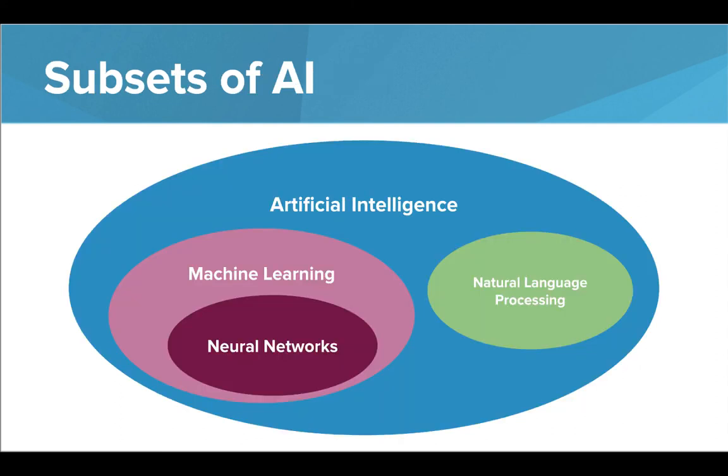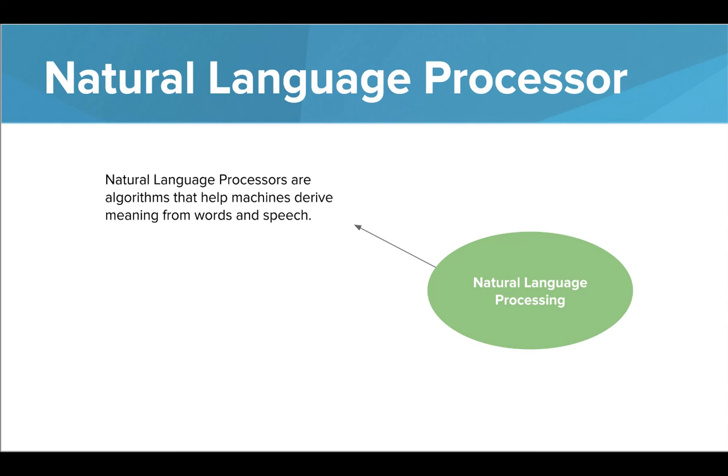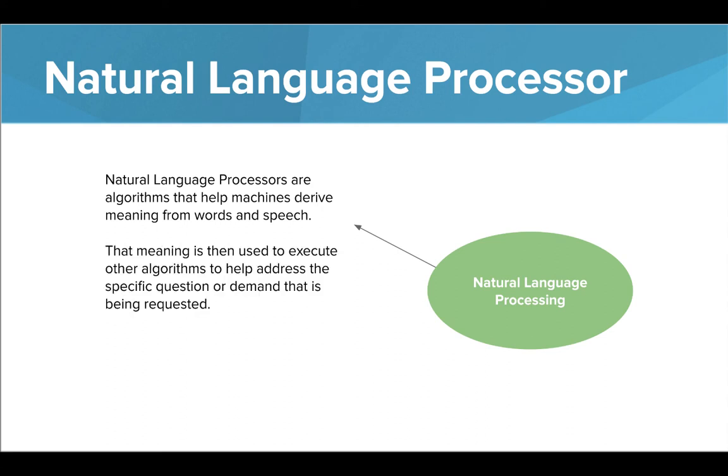While machine learning makes up a large subset of AI algorithms, natural language processing is another important subset. Natural language processing, or NLPs, are algorithms that help machines derive meaning from words and speech. The meaning is then used to execute other algorithms to help address the specific question or demand that's being requested.